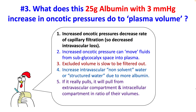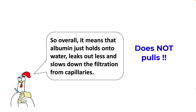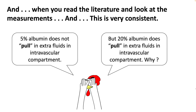When you give 25 grams of albumin, even despite minimal change in your oncotic pressure, it is able to decrease the rate of capillary filtration and it can also move some fluid from your subglycocalyx space into the plasma. Since it has some excluded volume it is slow to be filtered out, and the presence of non-solvent or structured water also relatively increases the volume of your intravascular compartment. Overall, albumin is able to hold on to water, leaks out less, and slows down filtration from the capillaries — and when you read the literature you find that this is very consistent.